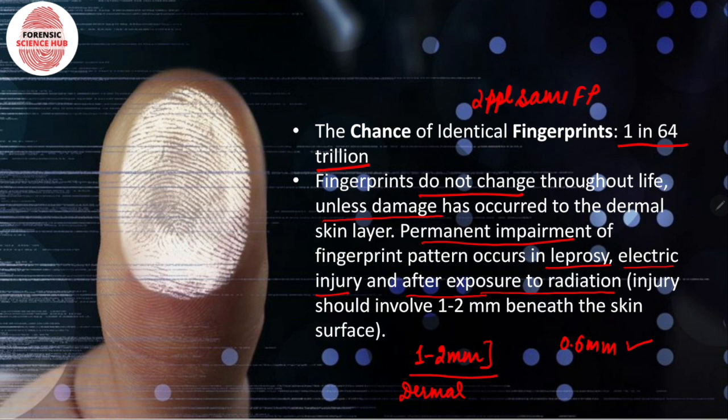Fingerprints can also be permanently and deliberately removed by criminals in order to reduce their chances of conviction. They can achieve this by burning their fingers, by plastic surgeries, or by putting their hands in acid. All these are different methods that criminals use to avoid identification.